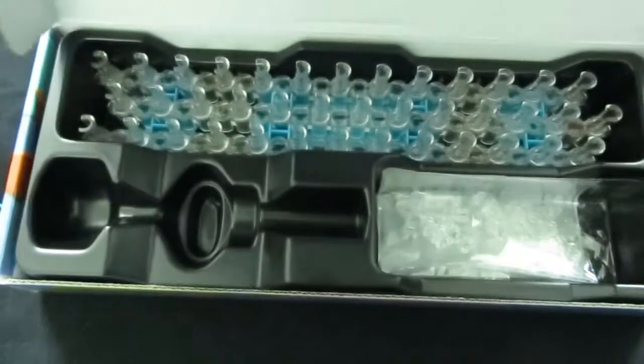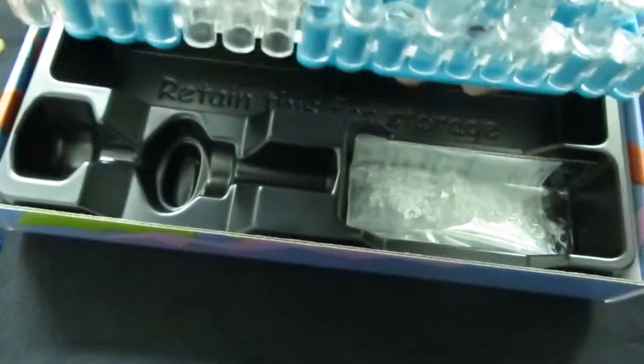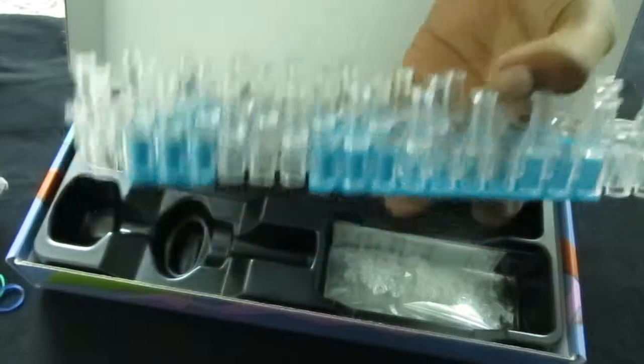So these are the three parts of the Rainbow Loom. Now I will introduce each part more in depth. The loom itself can be dismantled and used to make a larger loom by using two looms provided in two different sets.